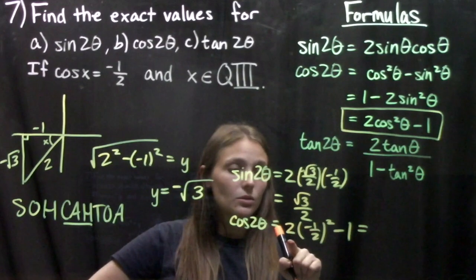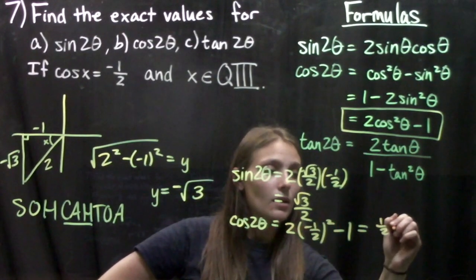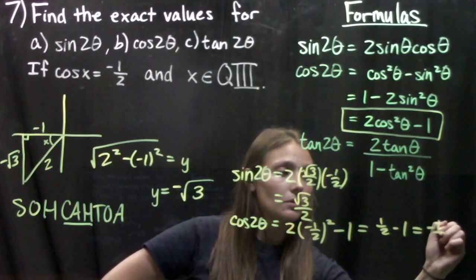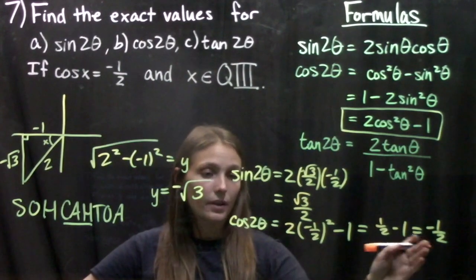When we solve that out we get 2 times 1/4 minus 1, so we get a half minus 1 equals negative half. So our cosine of the double angle equals negative half.